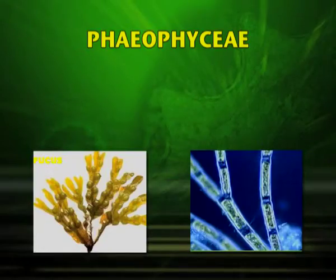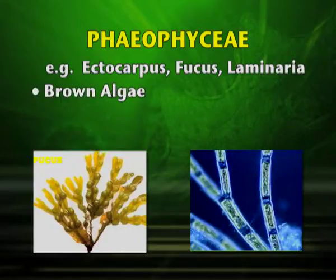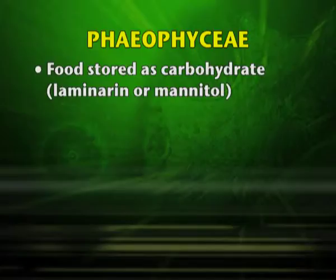Phaeophyceae includes organisms such as Ectocarpus, Fucus and Laminaria. They are generally known as brown algae. The chlorophyll present is A and C, and other pigments are carotenoids, xanthophylls and fucoxanthin. The cell wall contains cellulose as well as algin. The food is stored as carbohydrate in the form of laminarin or mannitol.